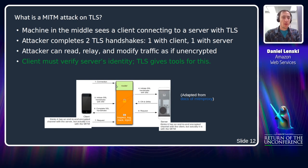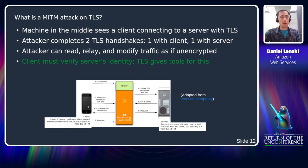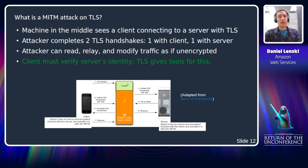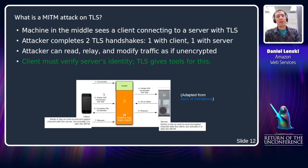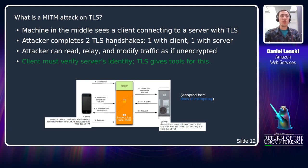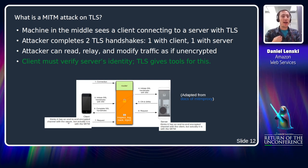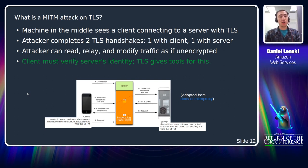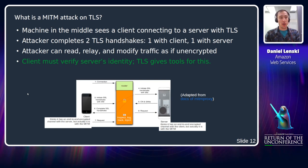Basically, I might have an application on my phone wanting to connect to a remote MariaDB server. I try to create a TCP connection and start a TLS handshake. But a machine-in-the-middle, rather than allowing that handshake to go through, splits it and completes two separate TLS handshakes — one with me the client, and one with the server. If we don't detect this and abort, I'll think I have an end-to-end encrypted channel with the server, but it's actually with the middleman. An attacker who's done this successfully can read, relay, and modify traffic just as if it were unencrypted.